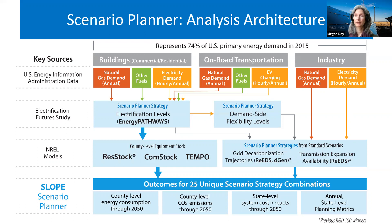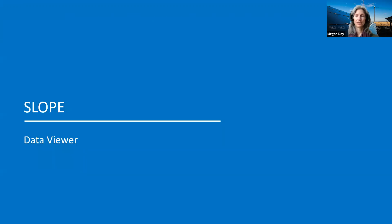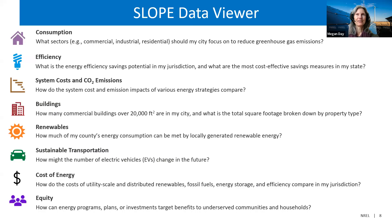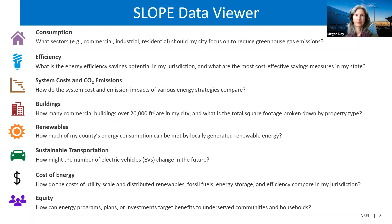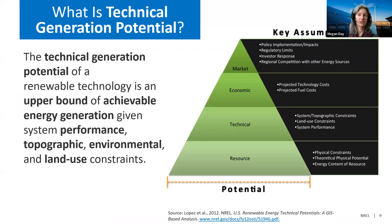The data viewer has over 40 different data sets, covering things like consumption by sector, efficiency potential, system costs and emissions, buildings and energy consumption, the built environment, renewables, sustainable transportation, transportation electrification, costs of energy, and equity data. We'll take a look at something from pretty much all of them.